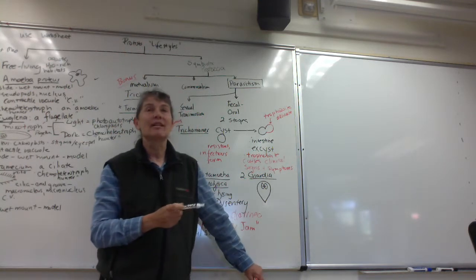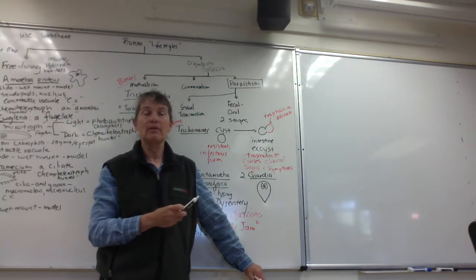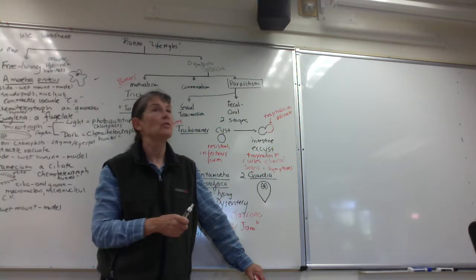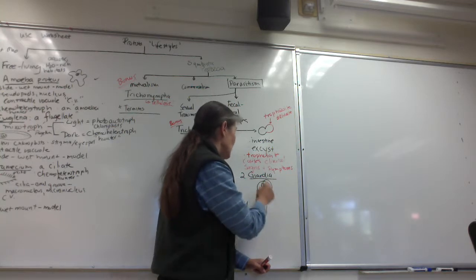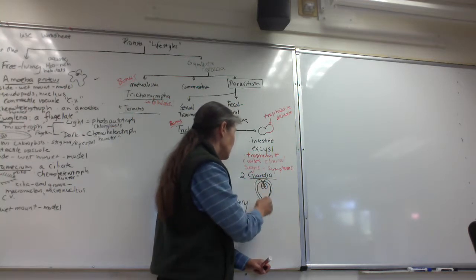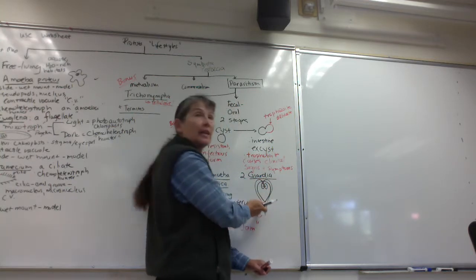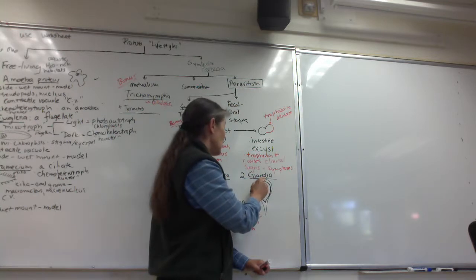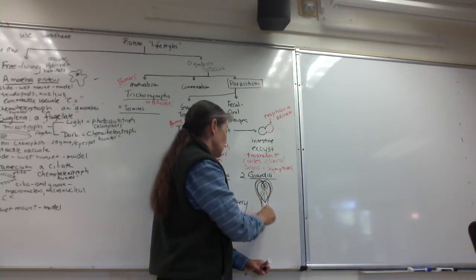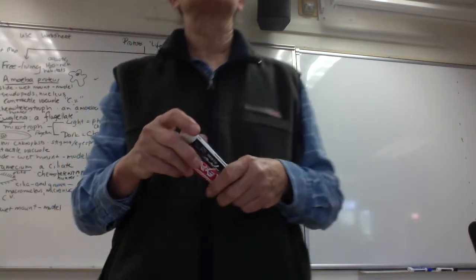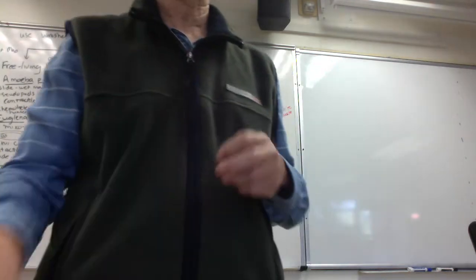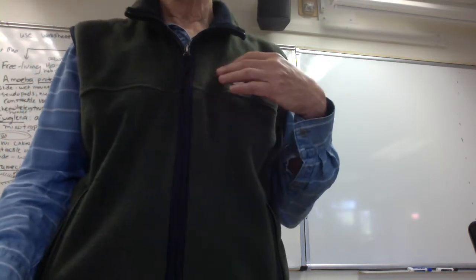These little guys are flagellates — they have four pairs of flagella. They're often so thin you won't see them, but sometimes you might see a little bundle of flagella. Often you can't see the flagella, but there are four pairs.